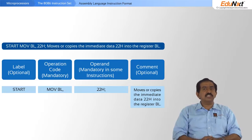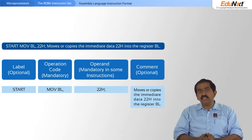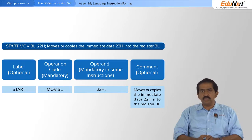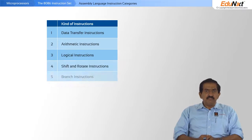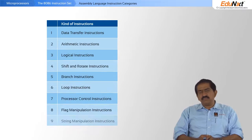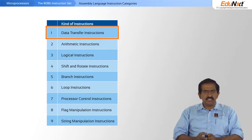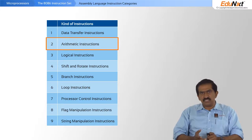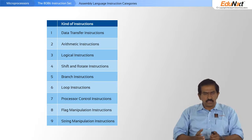When you look at the instruction set of the 8086, you should be able to identify these four components — label, opcode, operand, and comment — in most cases. There are nine different kinds of assembly language instruction categories: data transfer, arithmetic instructions, logical instructions, shift and rotate instructions, and so on. I am not going to go into all of them, but I will explain a couple of the more complex ones.